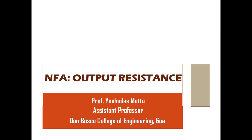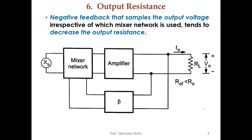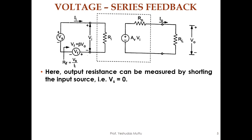Hello everyone, welcome to the final video on negative feedback amplifiers. The final characteristic is output resistance. We have already finished all the other characteristics, and this last one we are going to finish now. As the name suggests, for output resistance we are more concerned about the output. If you sample voltage, negative feedback will decrease the output resistance; if you sample current, it will increase the output resistance.